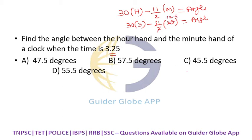30 into 3 is 90. 11 into 12.5... okay, that is 125 into 11 if you are multiplying.